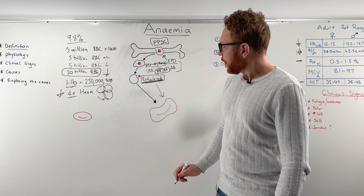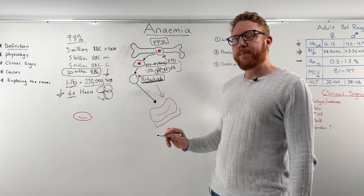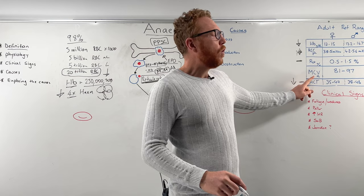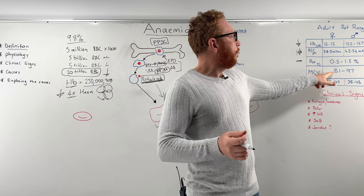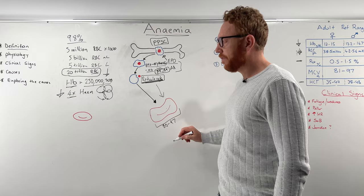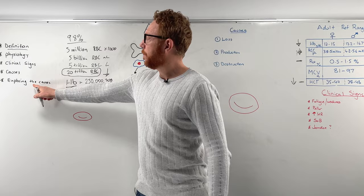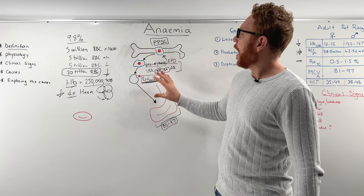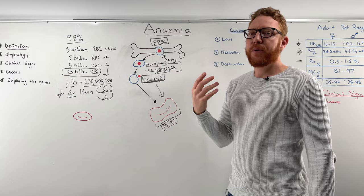Finally, one measurement we can do is look at the size of the red blood cell when it is mature. This is called the MCV — mean corpuscular volume — the volume of the red blood cell. This should be in the range of 80 to 97 femtolitres, and that will become important when we explore the causes. So that's the production process — how we make new red blood cells, at a rate of 2 million per second. It is a very busy process.